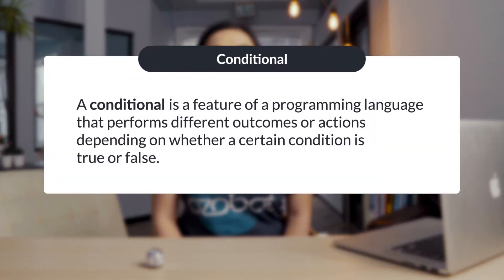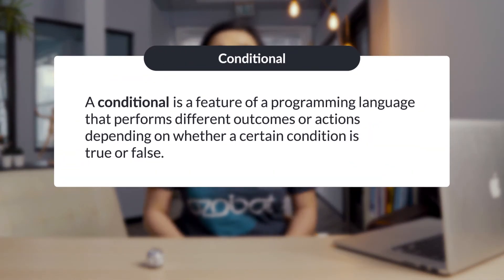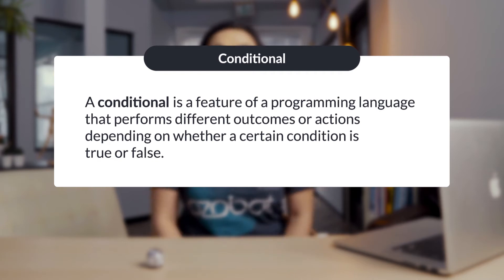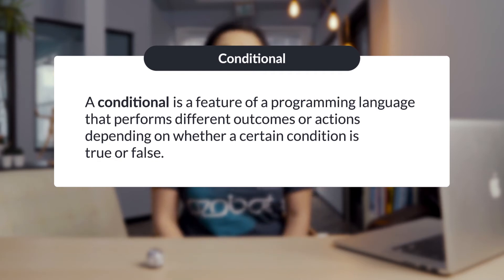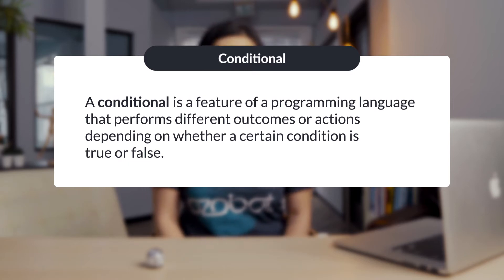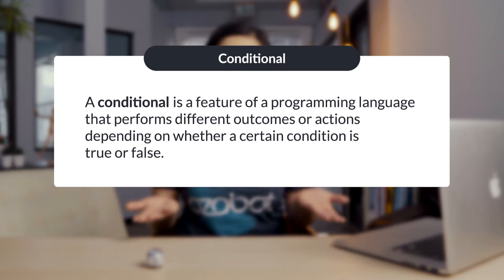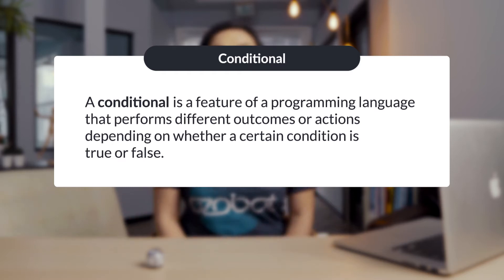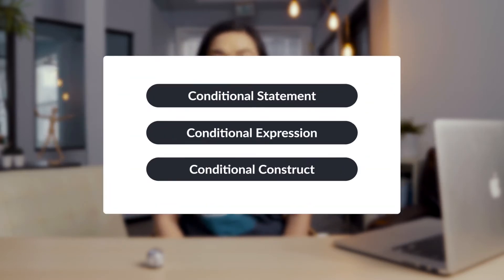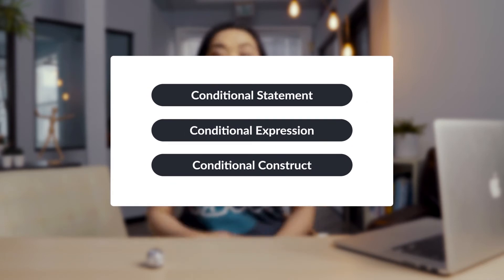A conditional is a feature of a programming language that performs different actions or outcomes depending on whether a certain condition is true or false. Simply put, a conditional is if-then logic, similar to cause and effect. A conditional can also be called a conditional statement, a conditional expression, or a conditional construct.